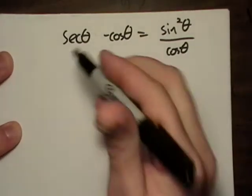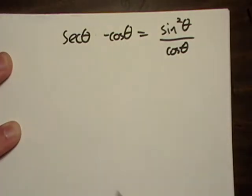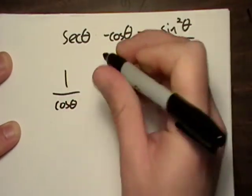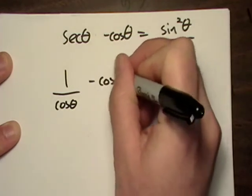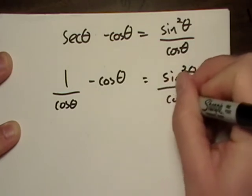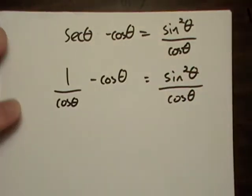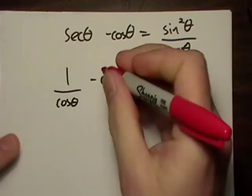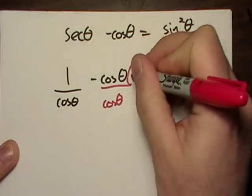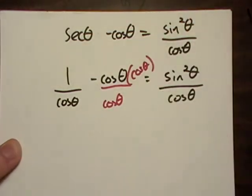First thing I want to do is I'm going to go ahead and I'm going to rewrite this as cosine. And it looks like right off the bat we've got one of these common denominator things.